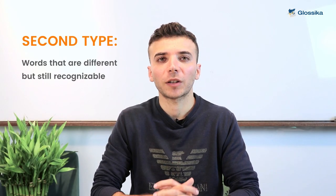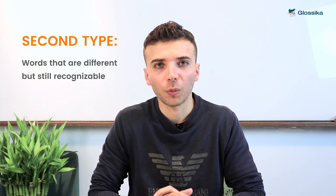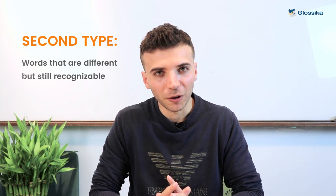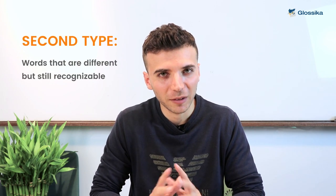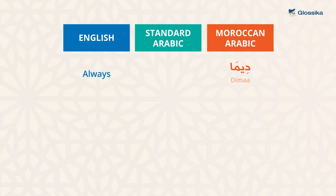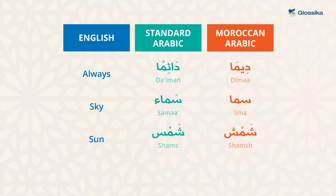The second type were the words that were similar and still recognizable but slightly different, like: Dima, daiman. Sma, samaa. Shams, shams. Raas, raas.